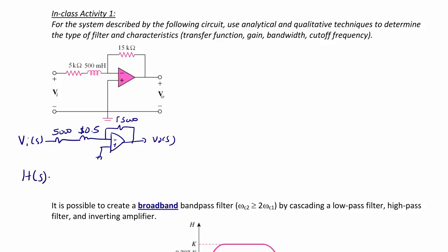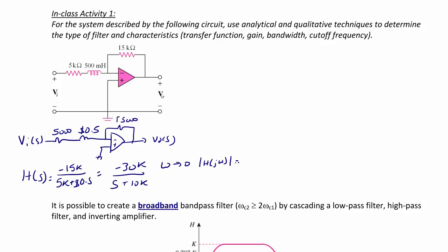The transfer function is negative 15k over (5k + 0.5s), which simplifies to negative 30k over (s + 10k). As omega goes to 0, the magnitude of H(jω) equals 3, and as omega goes to infinity, the magnitude of H(jω) equals 0.